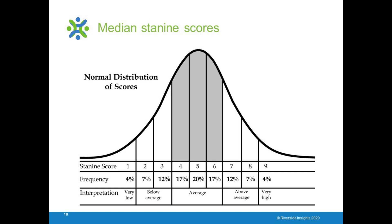The first part of the COGAT profile describes the student's typical performance across the three batteries. A stanine is a score scale based on the normal distribution or bell curve with nine possible values. A stanine score of 2 means the student was performing in around the bottom 11 percent of students. A stanine score of 9 means the student was performing in the top four percent of students, or above a 96th percentile.